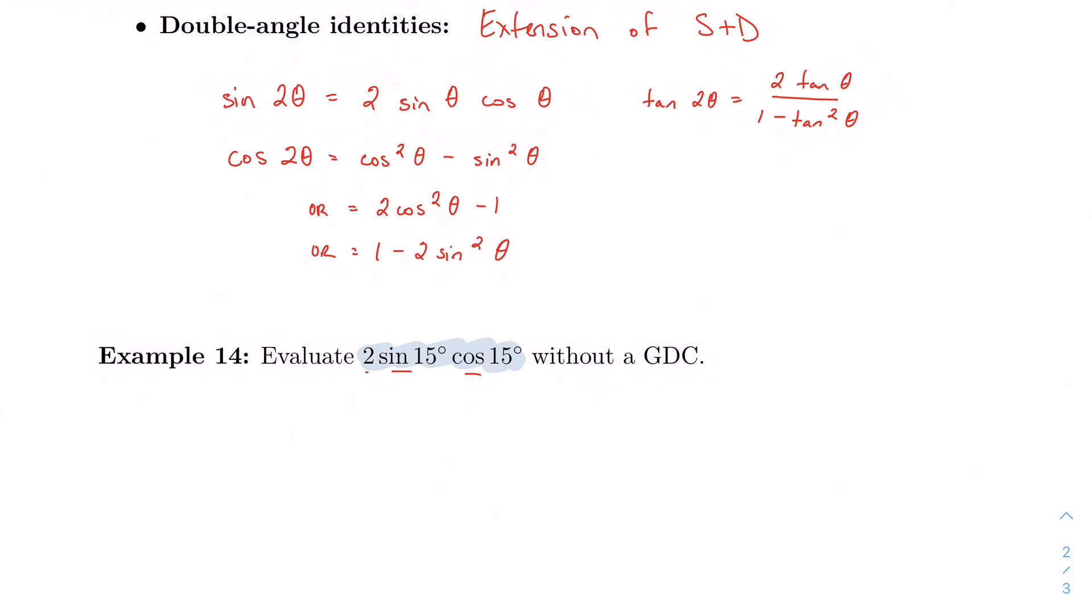So this whole expression is equal to sine of 2 times 15, which is sine of 30 degrees. And based on either your hand trick or rote memorization, you know that sine of 30 is one half. And you're done. That's all there is to it.